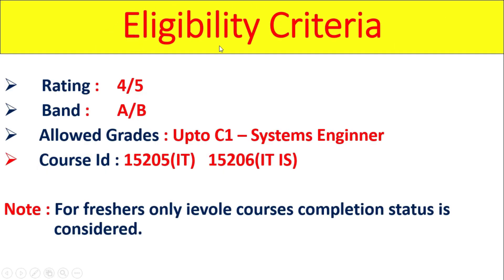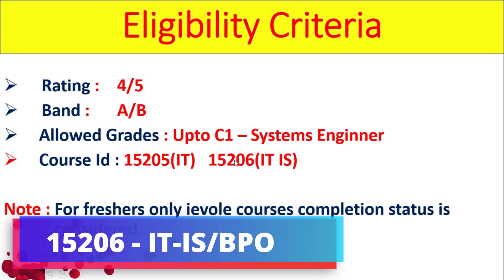First of all, we need to see the eligibility criteria for Wings 1. Your rating should be 4 or 5 and band A or B. Allowed grades are up to C1. Systems Engineering grades YG and YD are eligible. For BPO and ITIS-related people, consider course 15206. For IT people, consider course 15205 — the course ID for IT is 15205. For ITIS, subscribe to the 15206 course.